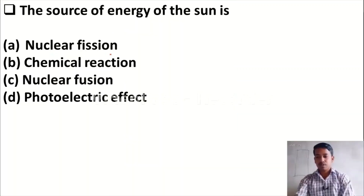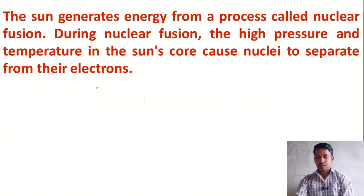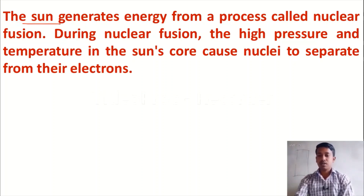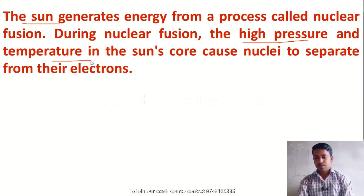Let us move to the question. Option B: chemical reaction. Option C: nuclear fusion. Option D: photoelectric effect. The right answer is Option C — nuclear fusion. The sun generates energy from a process called nuclear fusion. Please remember it. During nuclear fusion, high pressure and temperature in the sun's core cause nuclei to separate their electrons.